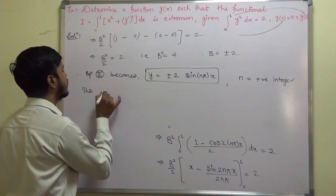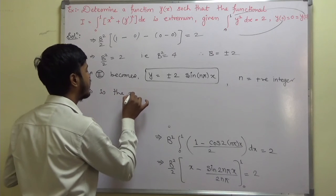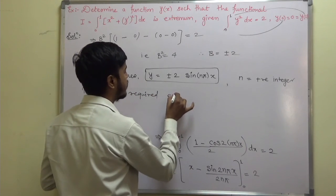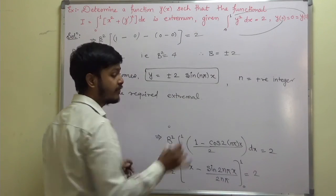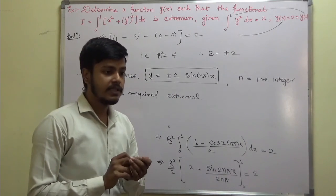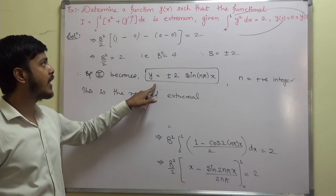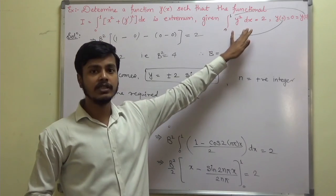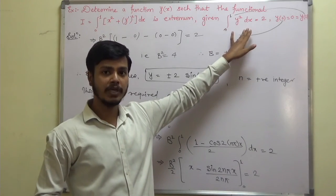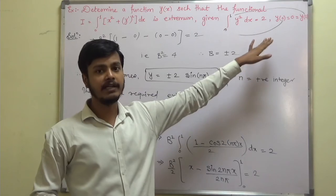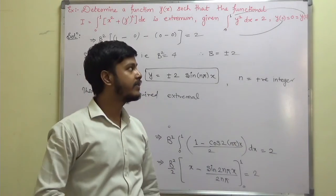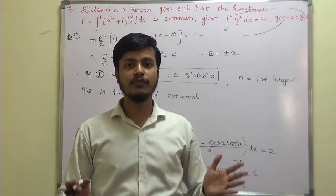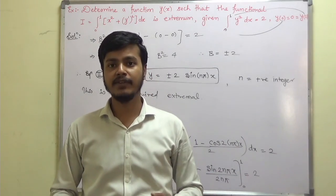This is the required function y equals y(x) that is extremal subject to the isoperimetric constraint and which satisfies the boundary conditions. I hope this problem is clear to you. Thank you for watching this learning video and have a good day.